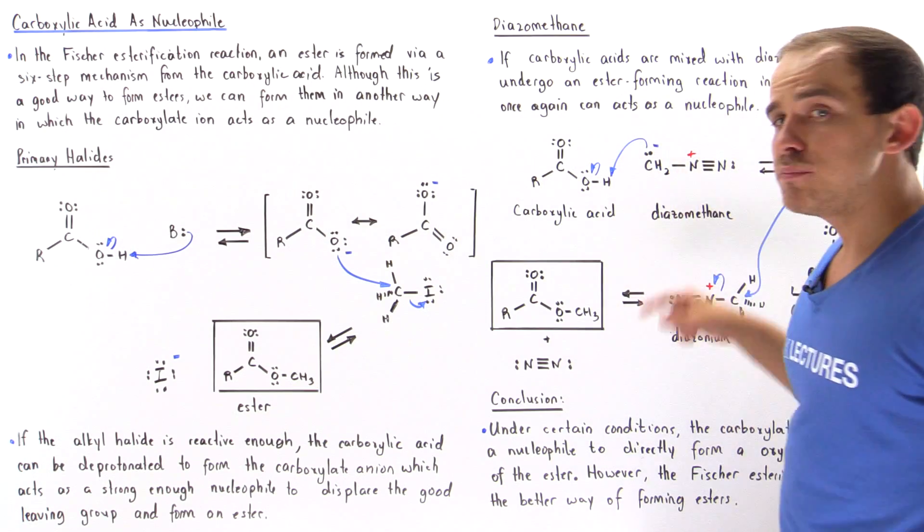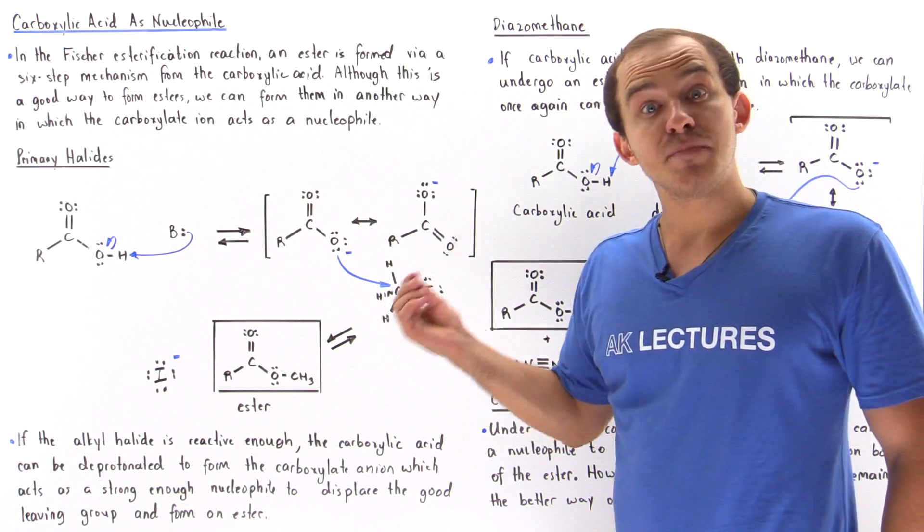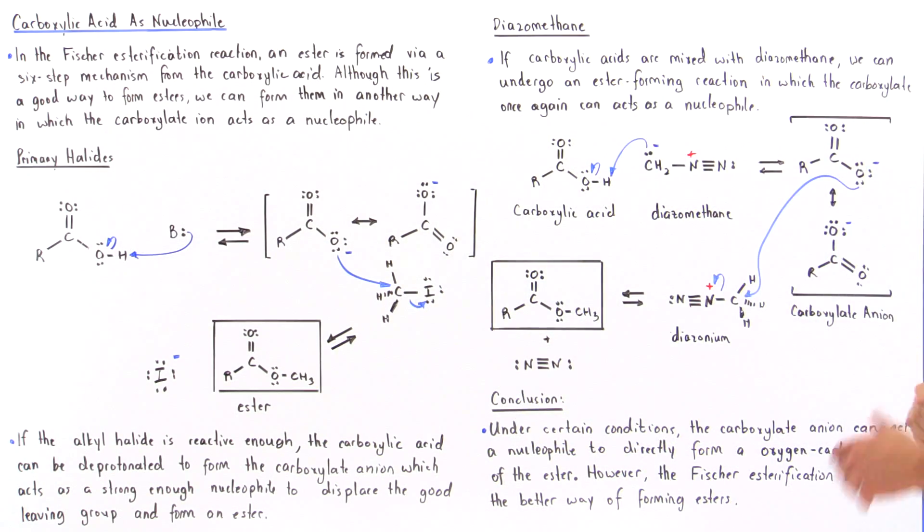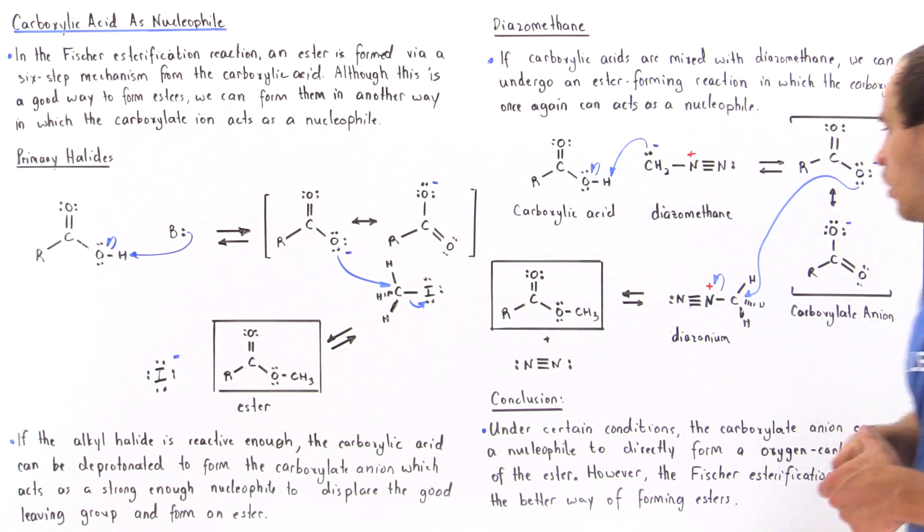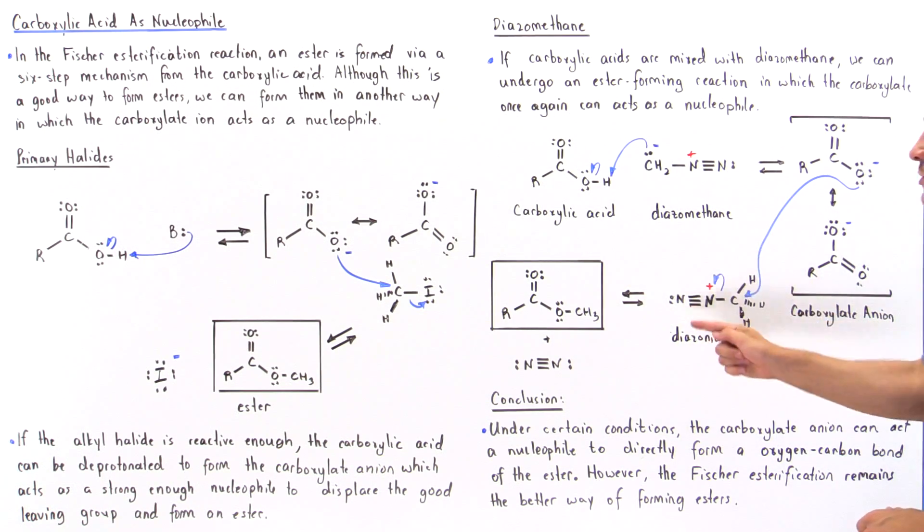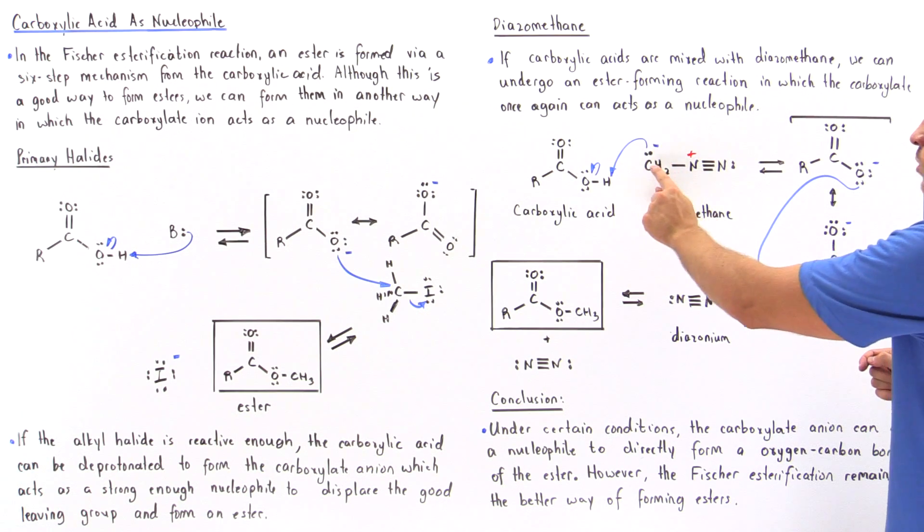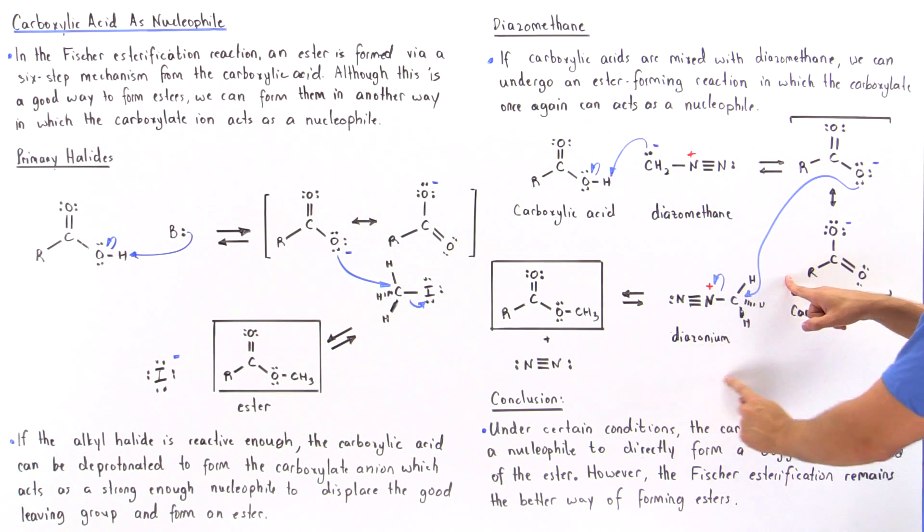So this carbon basically acts as a base because it has those two electrons grabbing the H off of the carboxylic acid and forming this resonance stabilized intermediate, the carboxylate anion. And now this acts as a nucleophile and it displaces this good leaving group, our diatomic nitrogen. So once this is protonated, we form this molecule here...